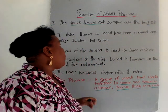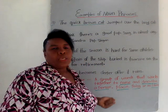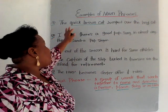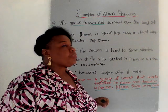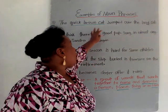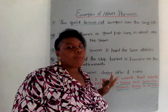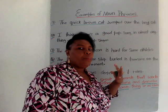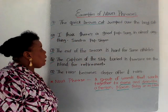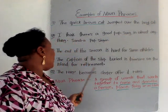So 'the quick brown cat' — he's quick, he's brown, and he's a cat. This is the noun phrase in the sentence. 'Quick' is a description, 'brown' is a description, and 'cat' is the noun. So the phrase plus the noun gives us 'the quick brown cat.'